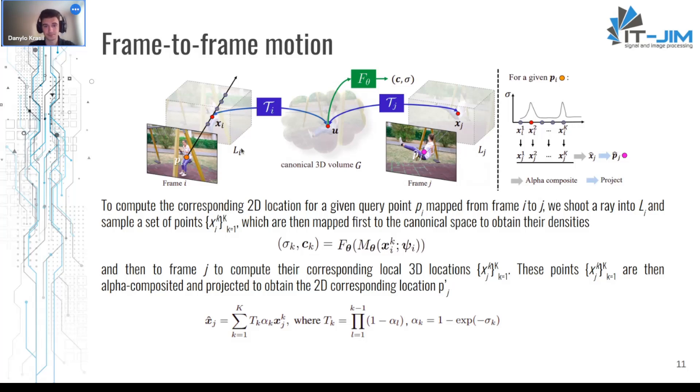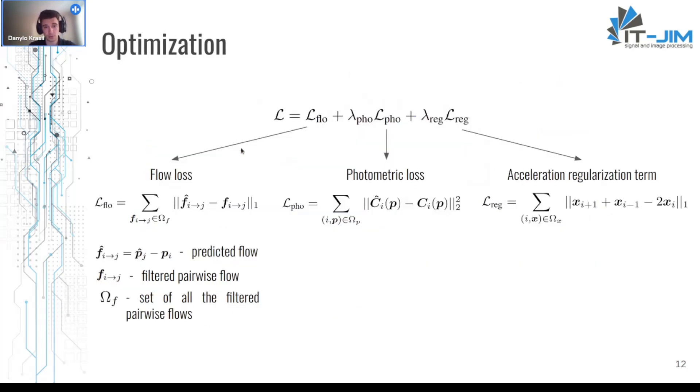For the optimization process the authors used weighted sum of three losses. The first one is flow loss. It's defined as a mean absolute error between the predicted flow from optimized representation and the supervising input flow from RAFT or TAPNet. The second one is photometric loss. It's defined as a mean square error between the predicted color and the actual color from input frames.